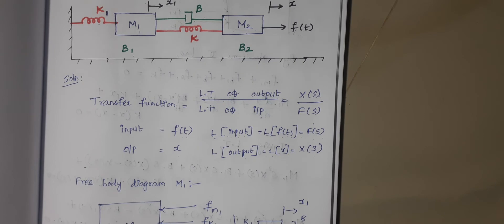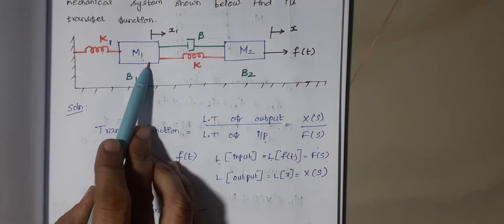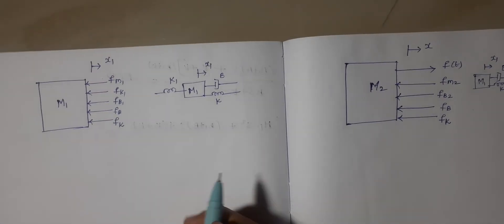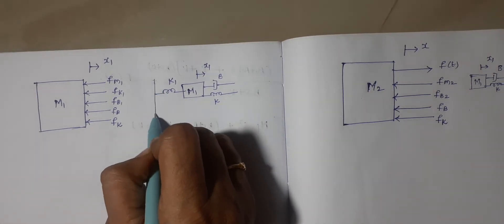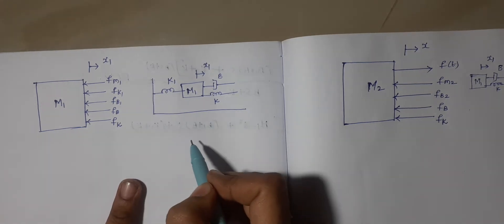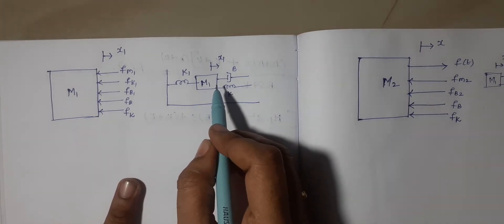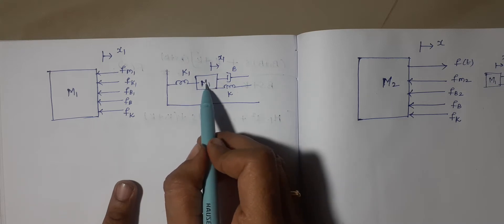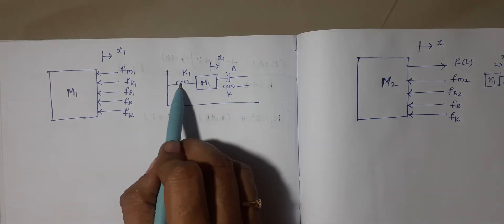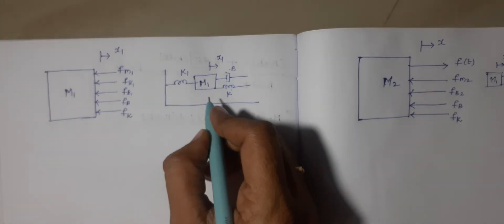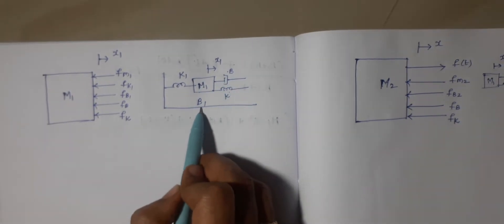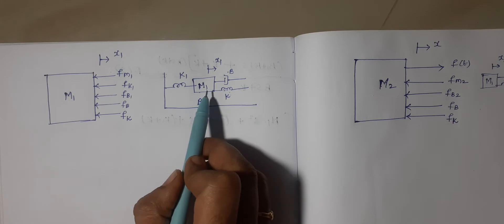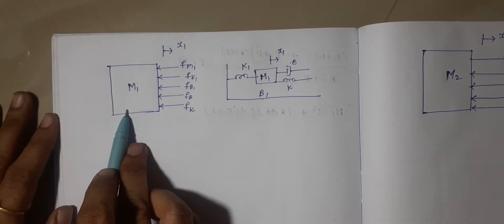Now we are going to draw the free body diagram of mass m1 and m2. This is the free body diagram of m1 as given in the problem. To draw the free body diagram, first count the number of elements attached to mass m1. There are 1, 2, 3 elements, and apart from that there is a dashpot b1 — so totally 4 elements are connected to mass m1.